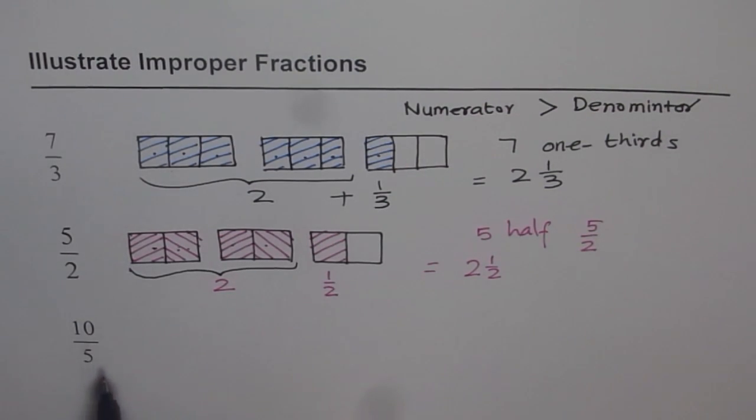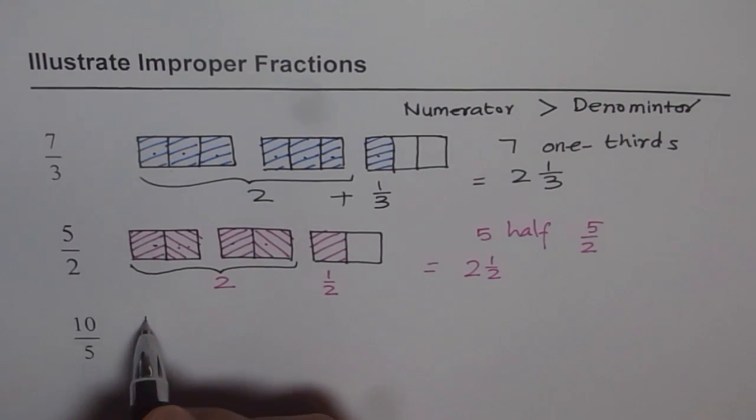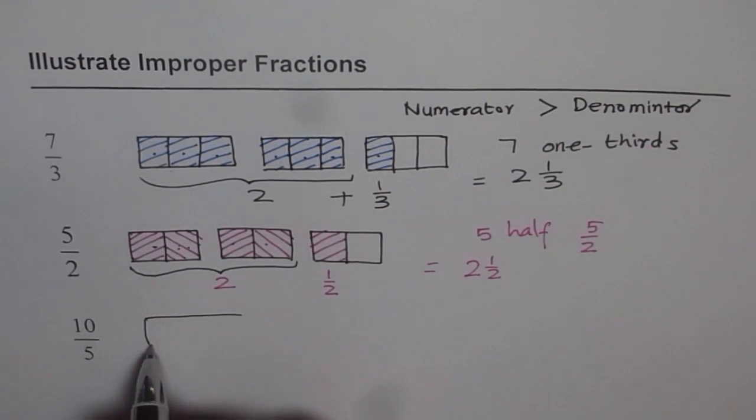Now, here is 10 over 5. Can you tell me how many rectangles should I draw in this case? Do I need to draw 10 of them? No. 5 I need 1 fifth, right? So that means 1 rectangle will be divided into how many parts?